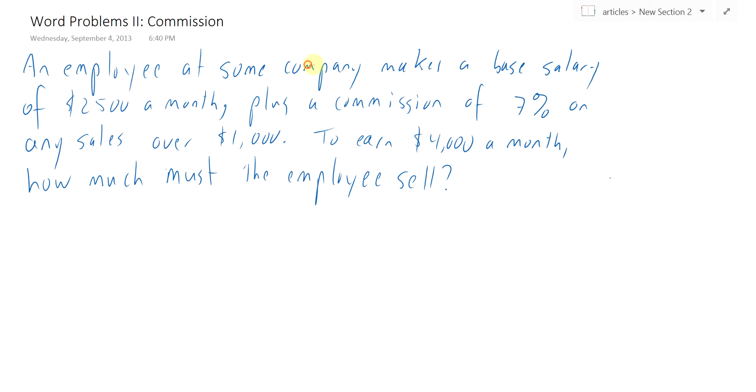We have an employee at some company, like a car dealership or something, and this employee makes a base salary of $2,500 a month plus a commission of 7% on any sales that this employee makes over $1,000. So no commission in the first thousand dollars, but they make a commission of 7% on anything over that.